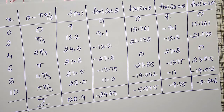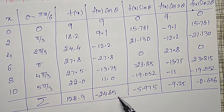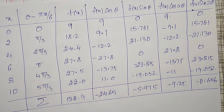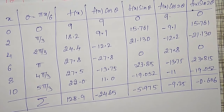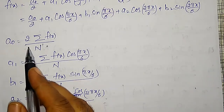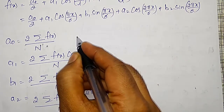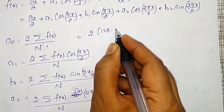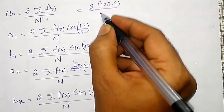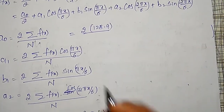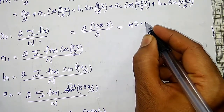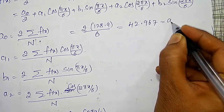The complete table has been prepared. You can observe that the sum of F of X is 128.9, along with the sums for F of X times cos theta, F of X times sin theta, F of X times cos 2 theta, and F of X times sin 2 theta. Using these values: A naught equals 2 times 128.9 divided by 6, which comes out to be 42.967.